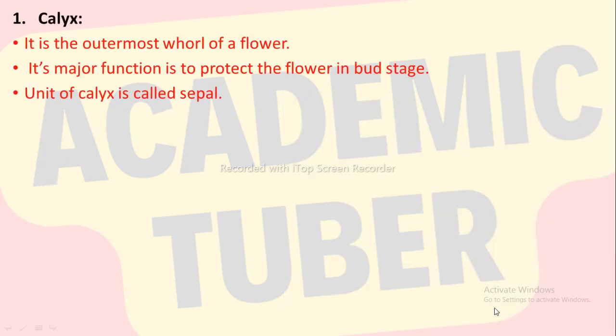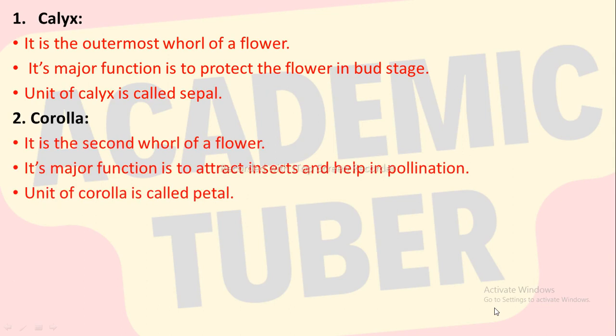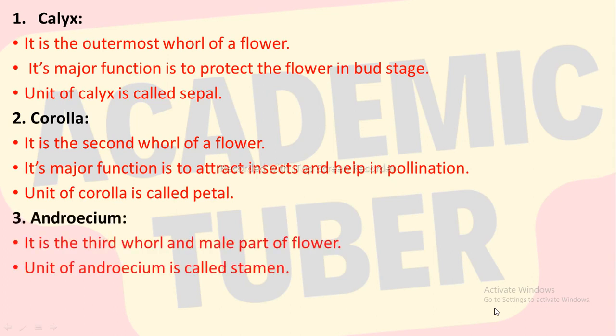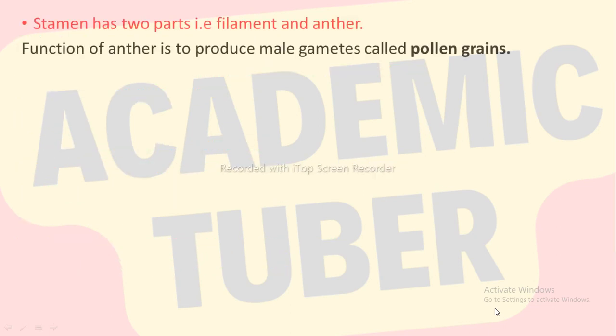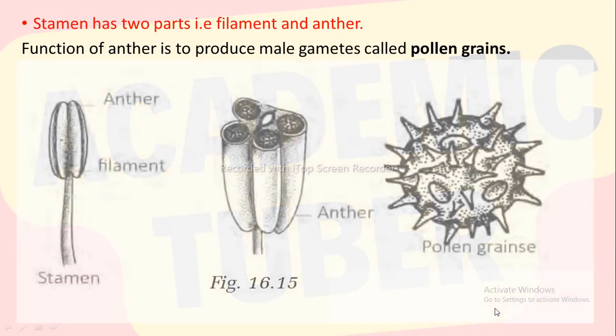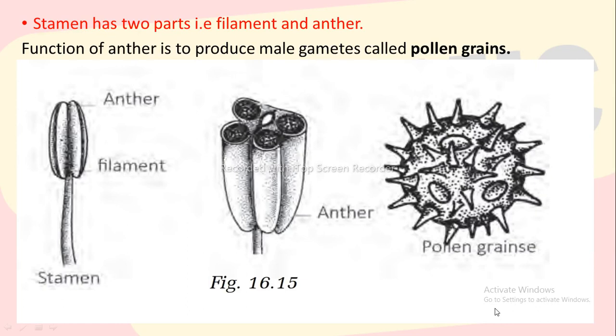Calyx is the outermost whorl of a flower. Its major function is to protect the flower in bud stage, and the unit of calyx is called sepal. Corolla is the second whorl of a flower. Its major function is to attract insects and help in pollination, and the unit of corolla is called petal. Androecium is the third whorl and male part of the flower. The unit of androecium is called stamen. Stamen has two parts: filament and anther. The function of anther is to produce male gametes called pollen grains.